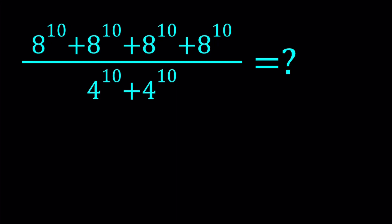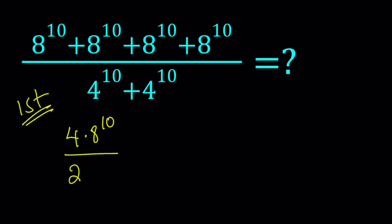Since we have 8 to the power 10 four times and it's being added, we can write the numerator as 4 times 8 to the power 10. We'll do two methods and this is the first one. The denominator — since we have 4 to the 10 twice — we can go ahead and write it as 2 times 4 to the power 10.